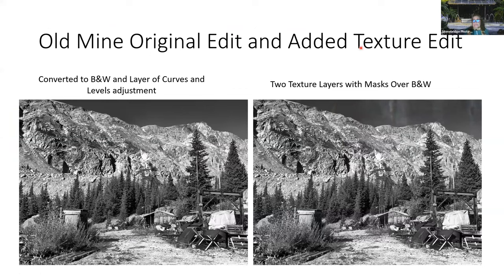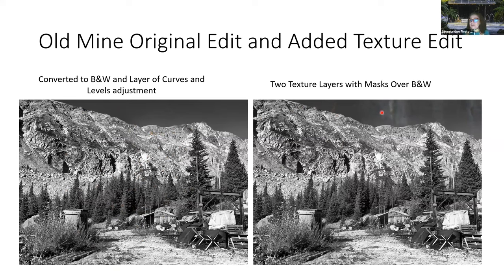This is an old mine in Colorado — I converted it to black and white with layers of curves and level adjustments. This one uses two texture layers: layers with masks overlying the black and white image. You can see the difference in the sky. It's already highly textured so it's a little hard to really visualize the big difference, but I did like the way the sky looked.